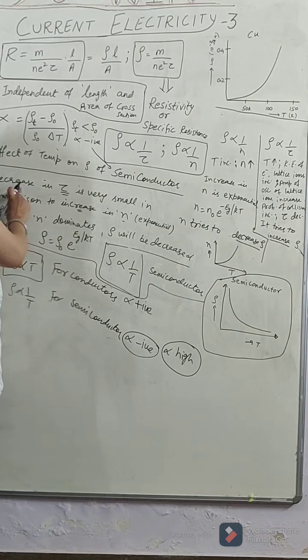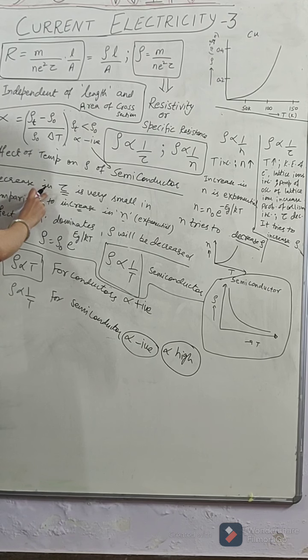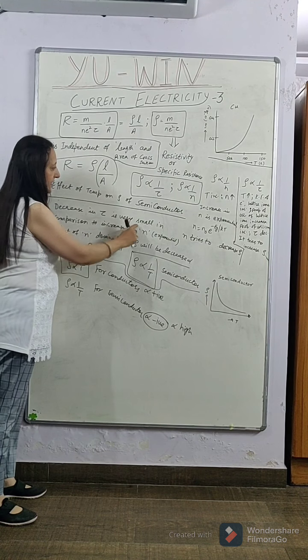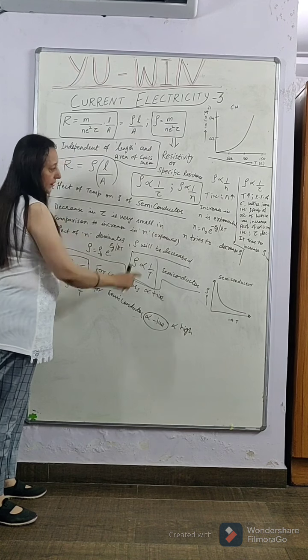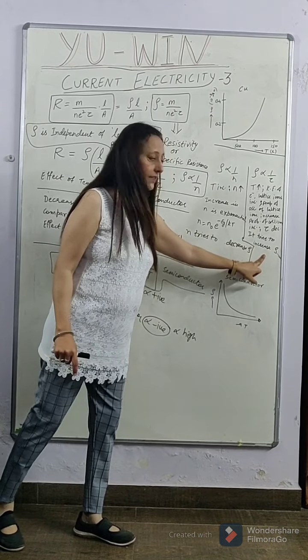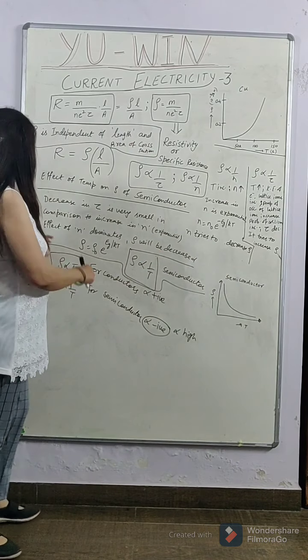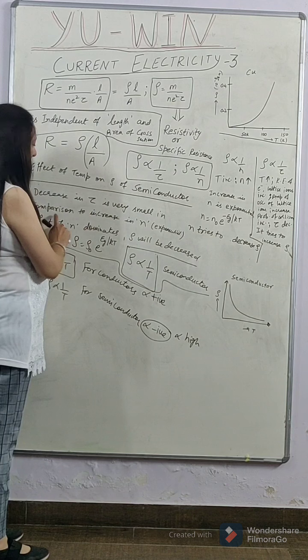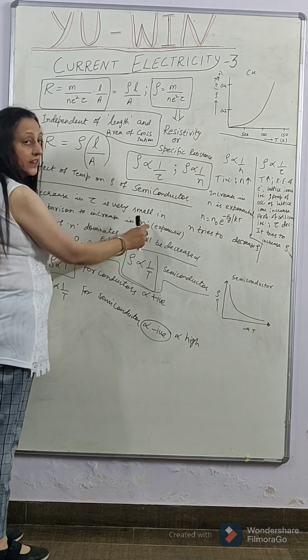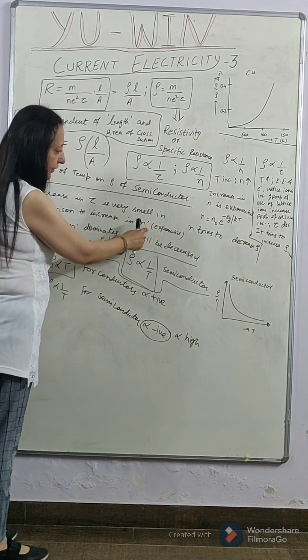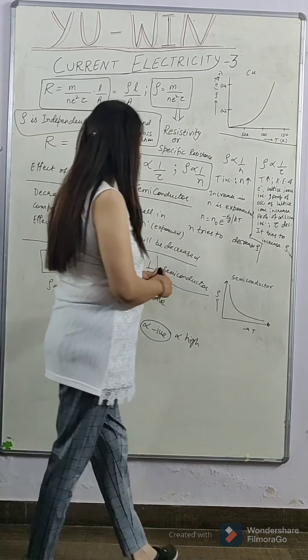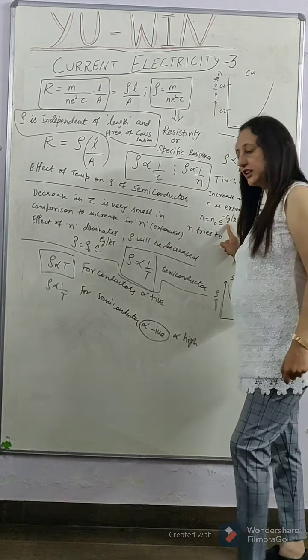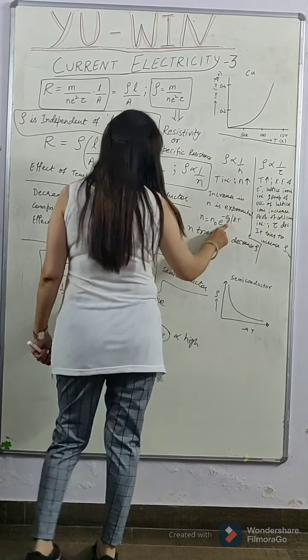But the decrease in the relaxation time is very very small. Look at relaxation time, the effect is very small. Decrease in relaxation time is very very small in comparison to increase in the number density of electrons. You can see from this expression that N is equal to N0 e to the power minus EG by KT, where EG is the energy gap in case of semiconductors.